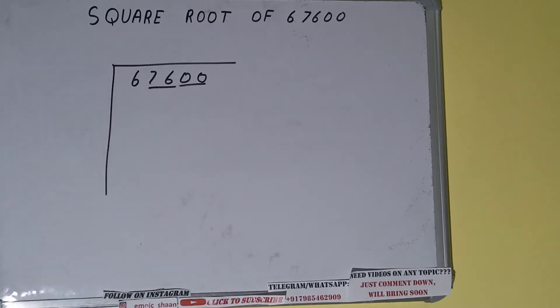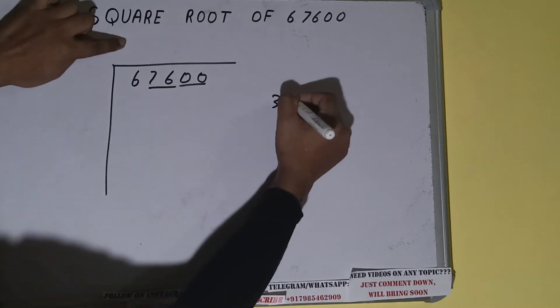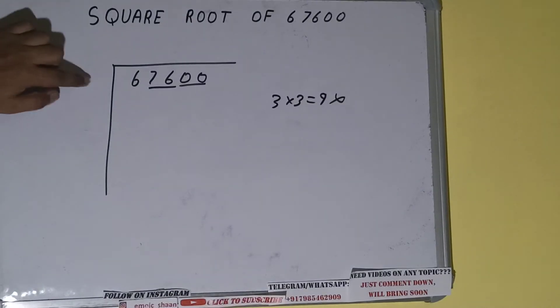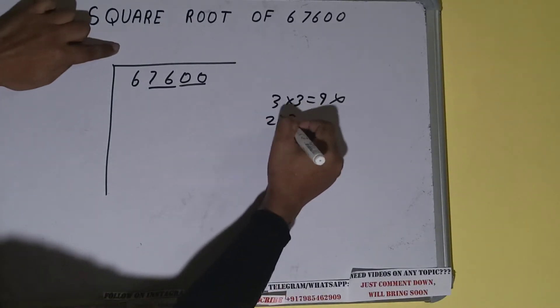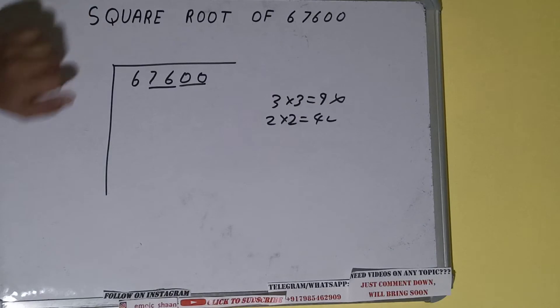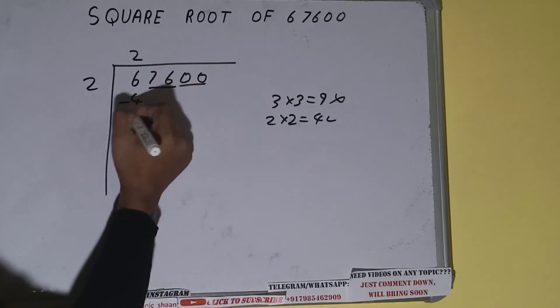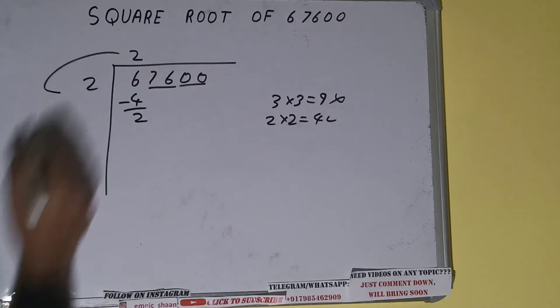The rule is whatever number we write here we have to write here also. So if we write three here and three here we'll be getting nine, which is greater than six, so we cannot use it. If we write two here and two here we'll be getting four, which is good to use. So two here and two here: four. Subtract, two will be left.